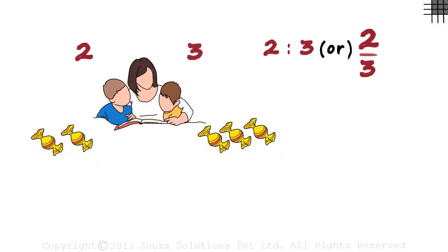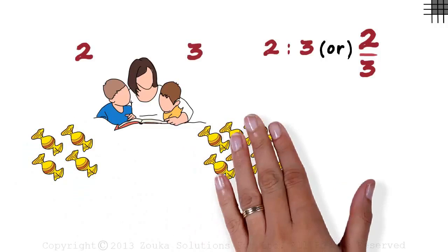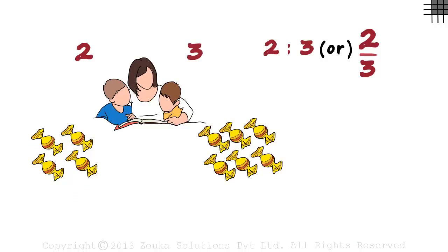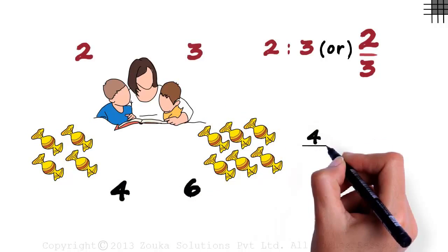This went on for quite a few days. So every time the magic hand gave two chocolates to Gaurav, it gave three chocolates to Jai. Now let's count the total number of chocolates each of them have. Gaurav has 4 and Jai has 6. The ratio now becomes 4 by 6.